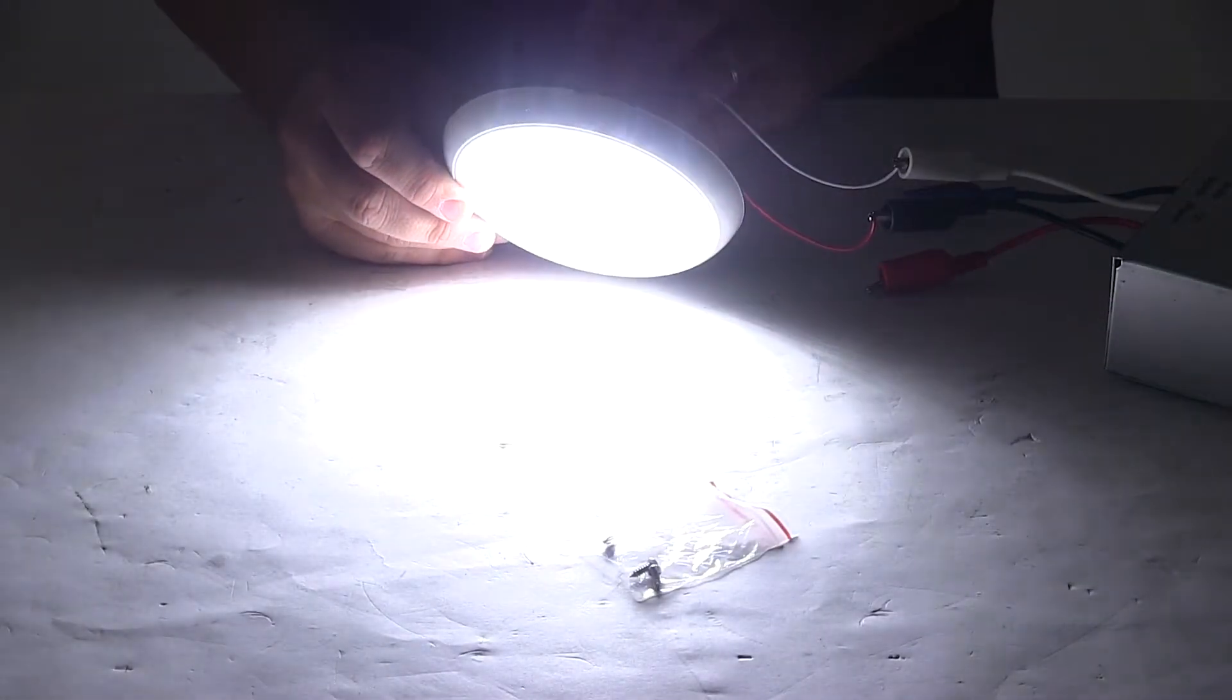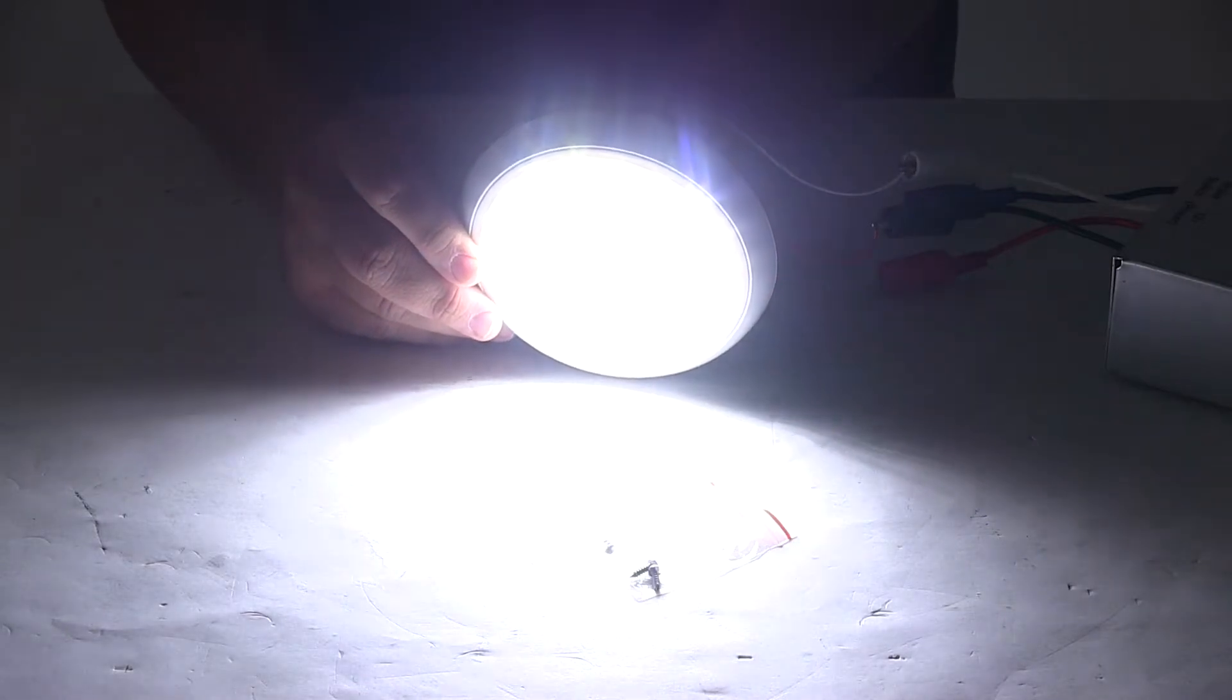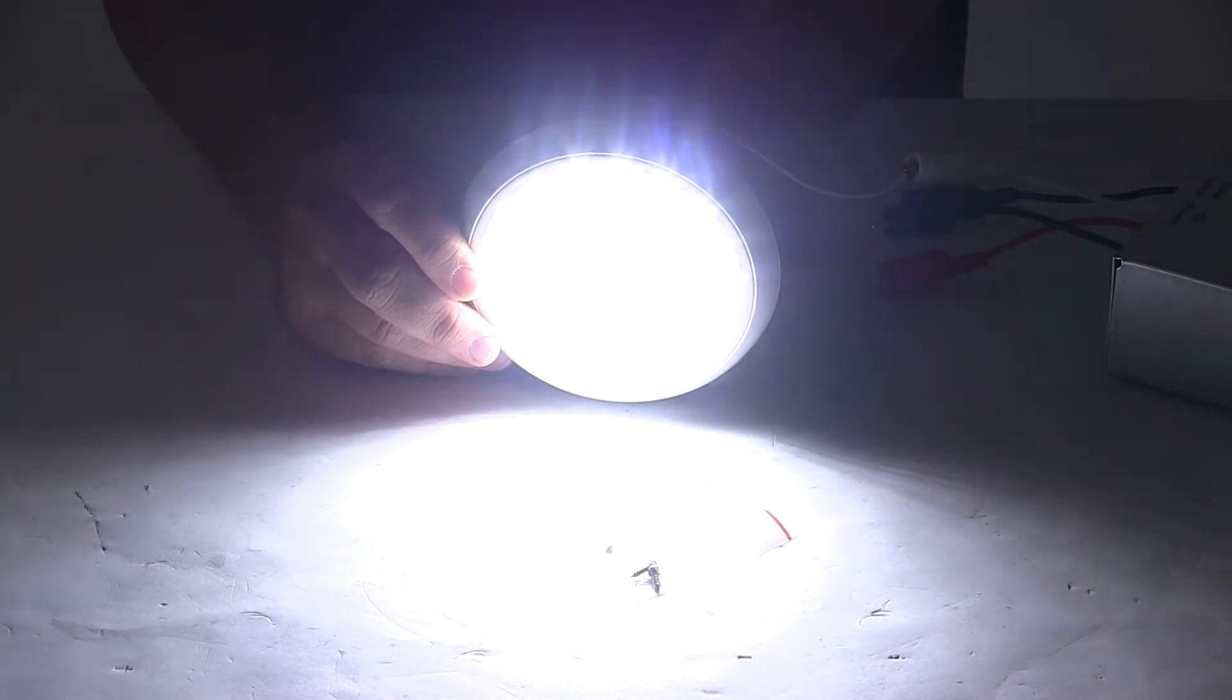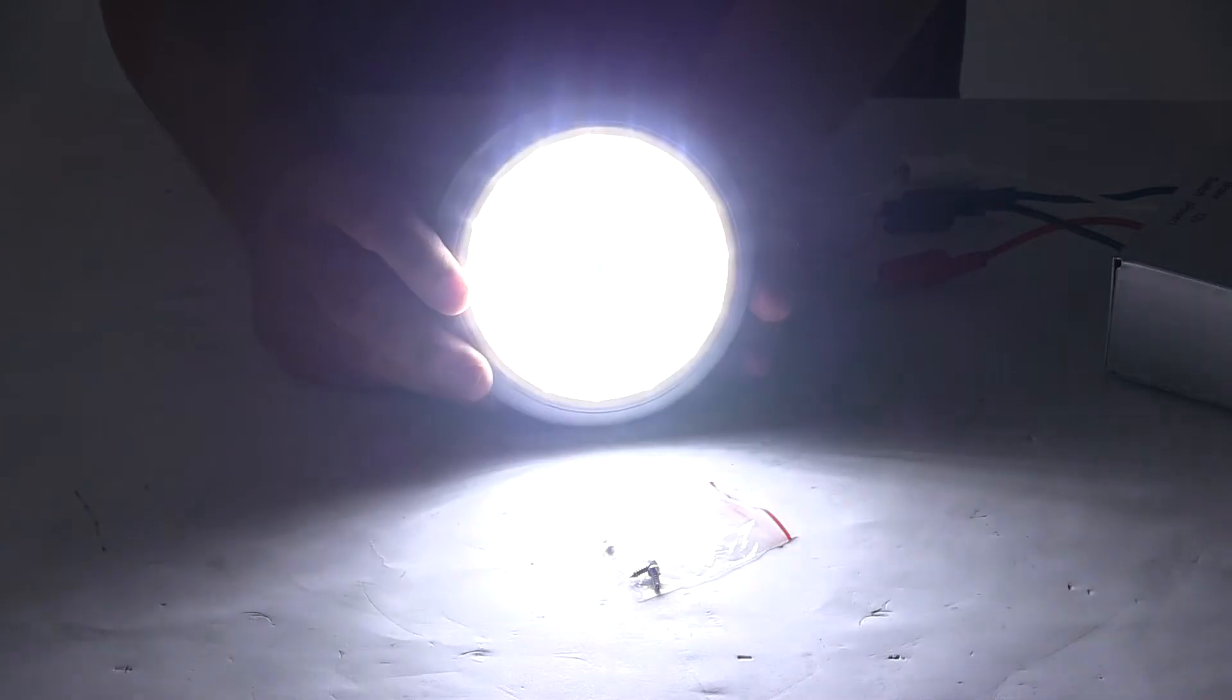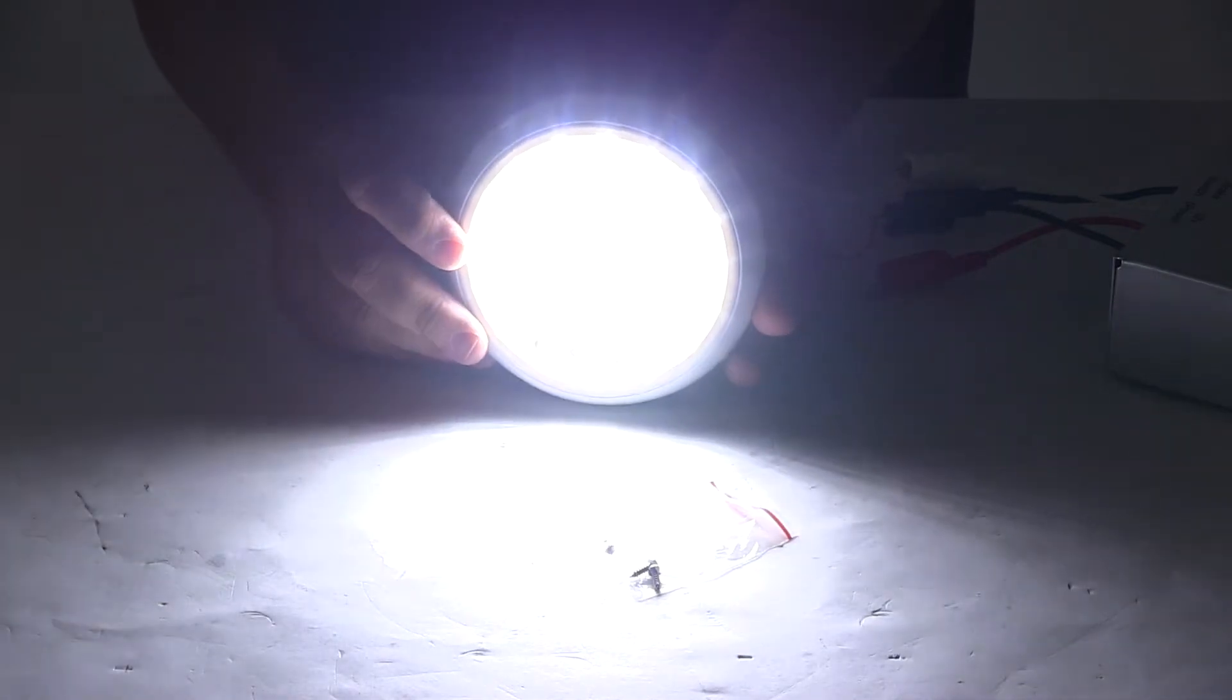As you can see, it sends out a very strong, consistent signal. This is a very bright LED light with a total of 36 diodes and 2200 lumens.